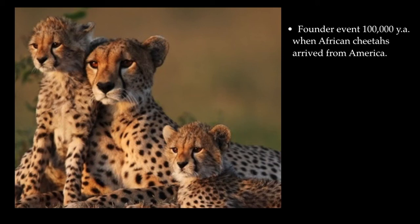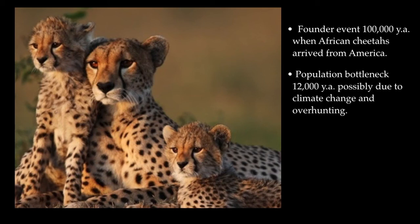So a founder effect lowered the diversity of the African cheetah because they are all descendants of the few individuals that managed to migrate to Africa. Then a second genetic drift event occurred about 12,000 years ago, which happens to coincide with the late Pleistocene extinctions, during which many large-bodied mammals — including the American cheetahs — went extinct around the world. Researchers hypothesized that these extinctions were caused by climate change, overhunting by humans, or a combination of both. So these two separate genetic drift events significantly reduced the population of the cheetahs and therefore reduced their genetic variation to the point that nowadays cheetahs have some of the lowest genetic diversity of any animal.